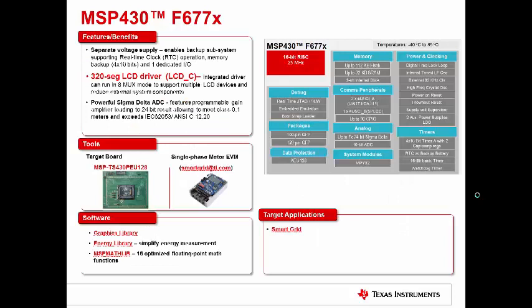The F677X is an example of a device family with the LCD-C module, supporting up to 320 segments. This device family is primarily targeted at smart grade applications. In fact, you can find some TI designs on the TI Designs website that use this device, including metering EVMs with LCDs on them.